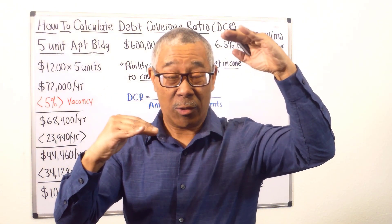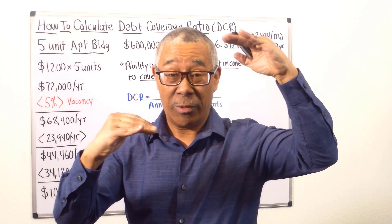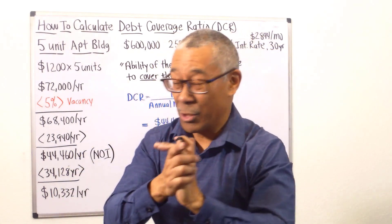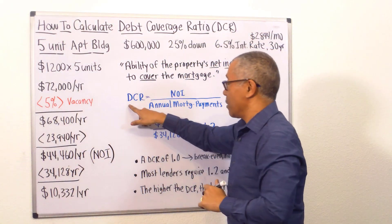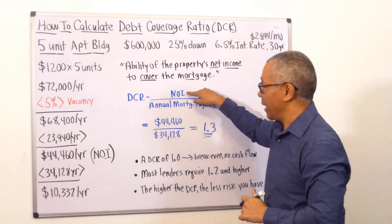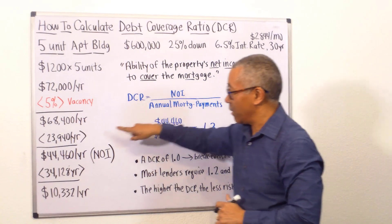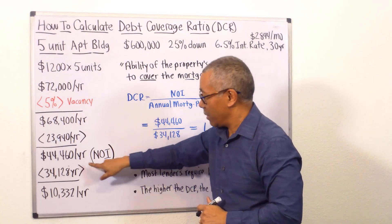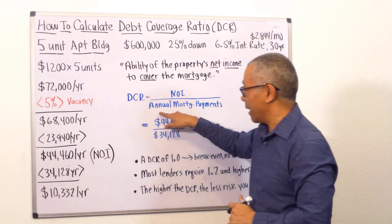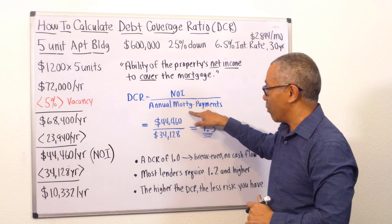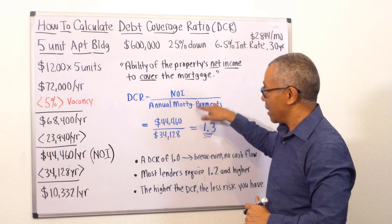You want this ratio to be a certain number. The debt coverage ratio is your NOI — your net operating income — divided by your annual mortgage payments.